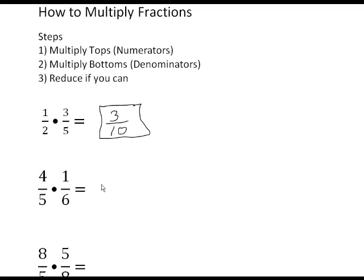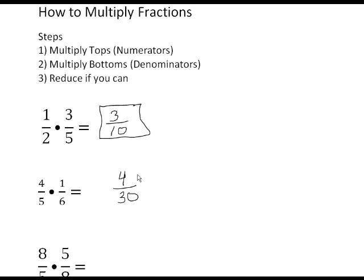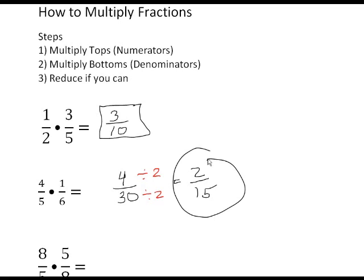The next example is four fifths times one sixth. Step one: multiply the tops — four times one is four. Step two: multiply the bottoms — five times six is thirty. Step three: reduce if you can. Both the top and bottom are even numbers; they can be divided by two. Four divided by two equals two, and thirty divided by two is fifteen. So four fifths times one sixth equals two fifteenths.